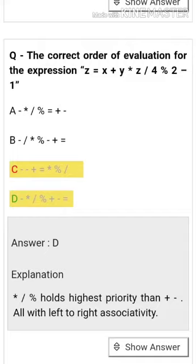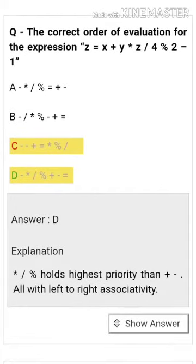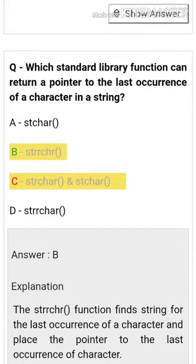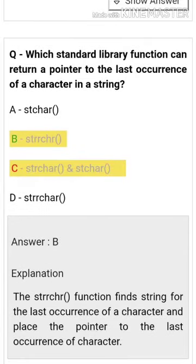Which standard library function can return a pointer to the last occurrence of a character in a string? The string function to find the last occurrence of a character is strrchr. It returns a pointer to the last occurrence of the character.